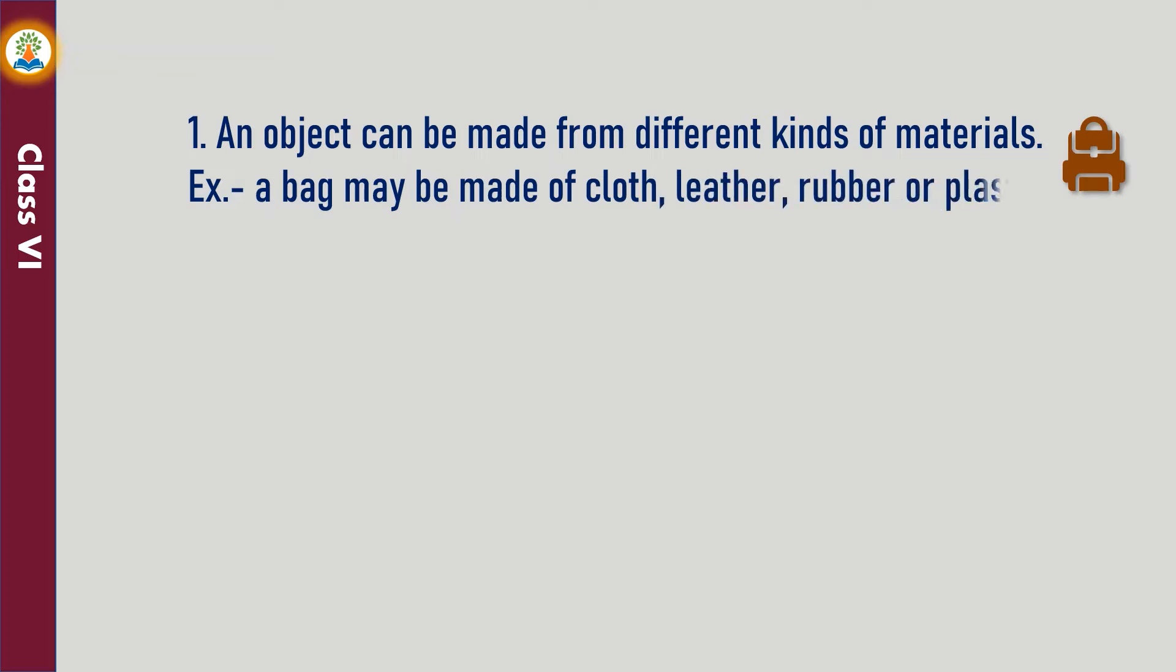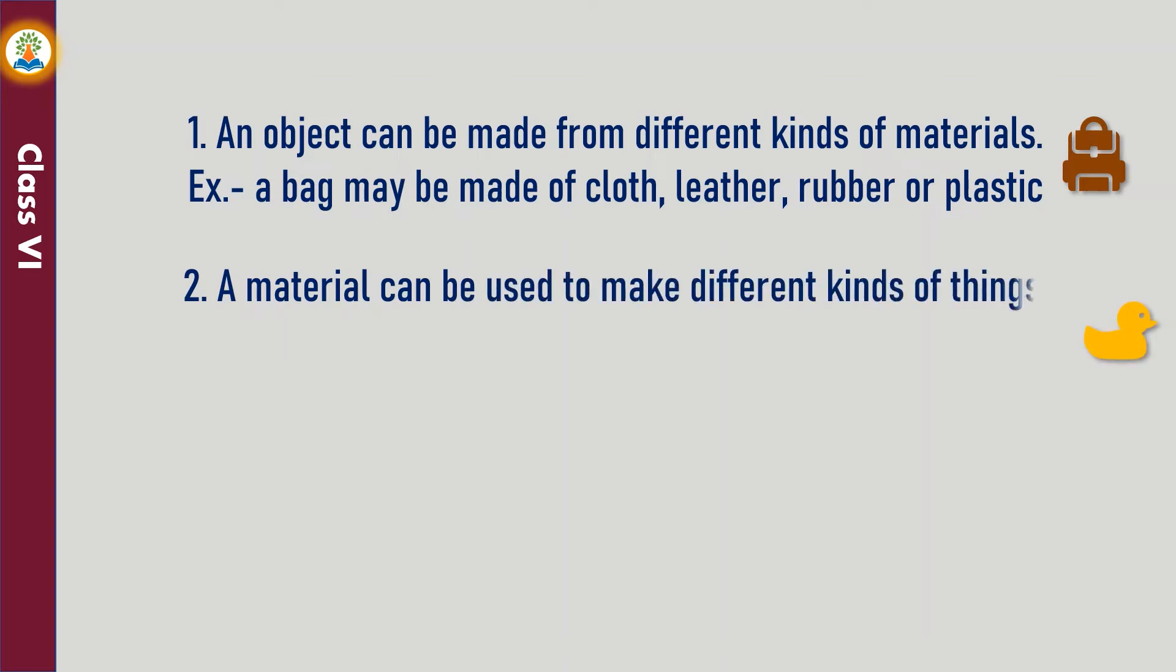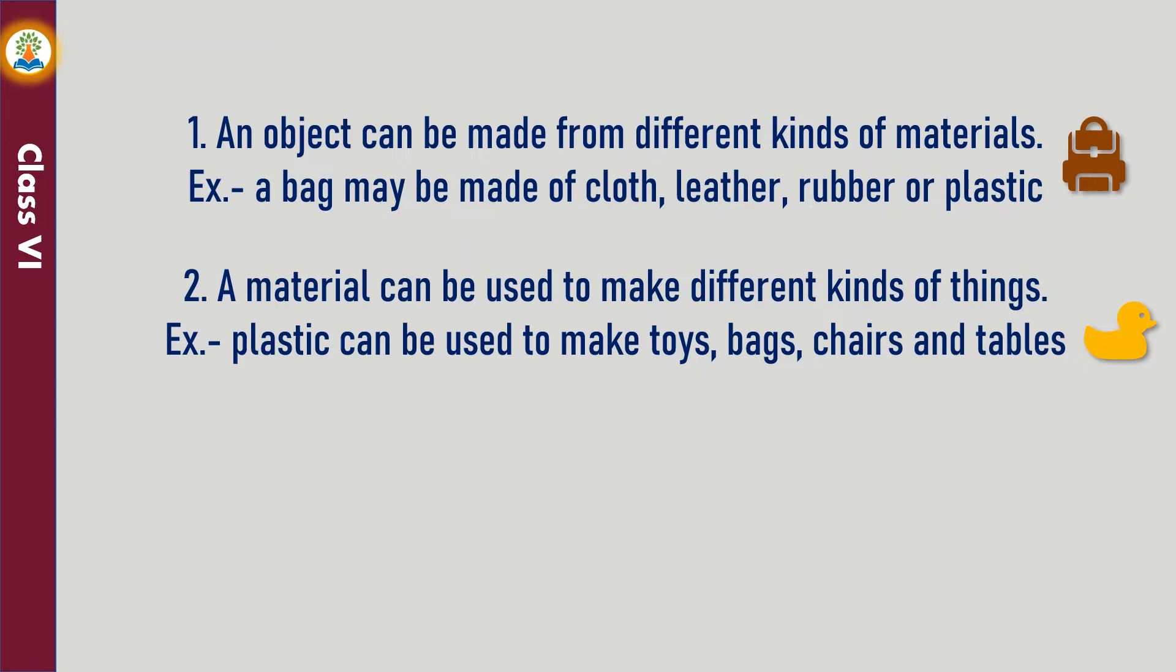For example, a bag may be made of cloth, leather, rubber, or plastic. A material can be used to make different kinds of things. For example, plastic can be used to make toys, bags, chairs, and tables.